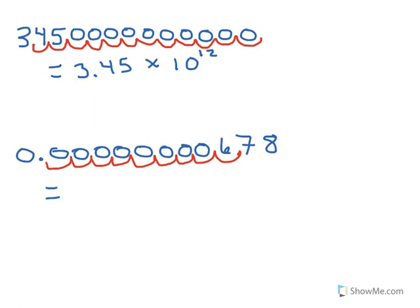So we can write this as 6.78, putting the decimal after our six, times 10 to the negative ninth power.